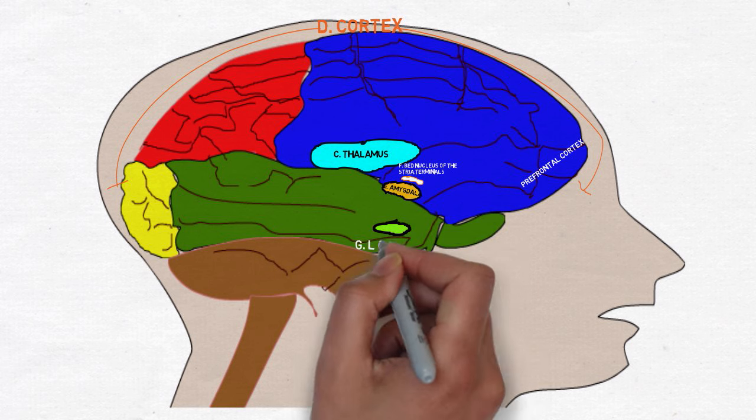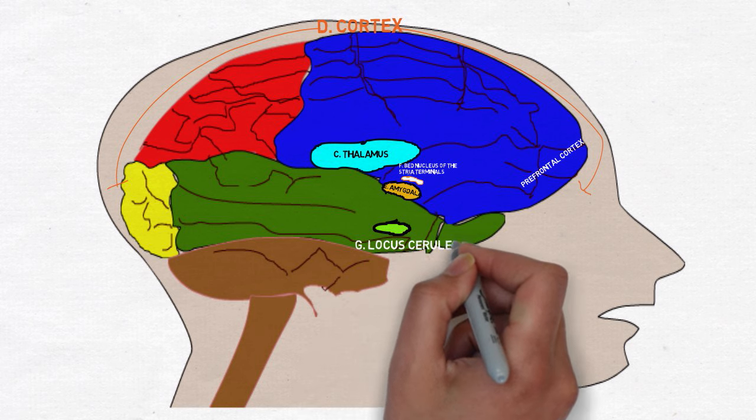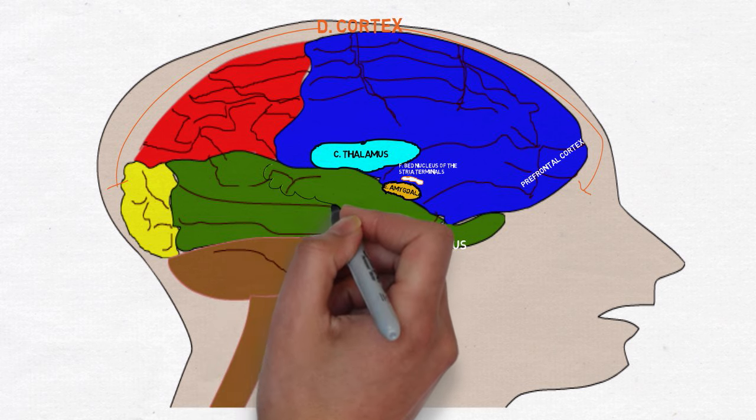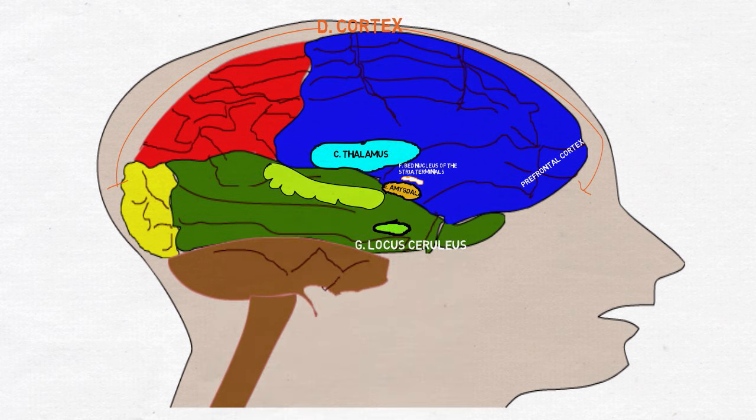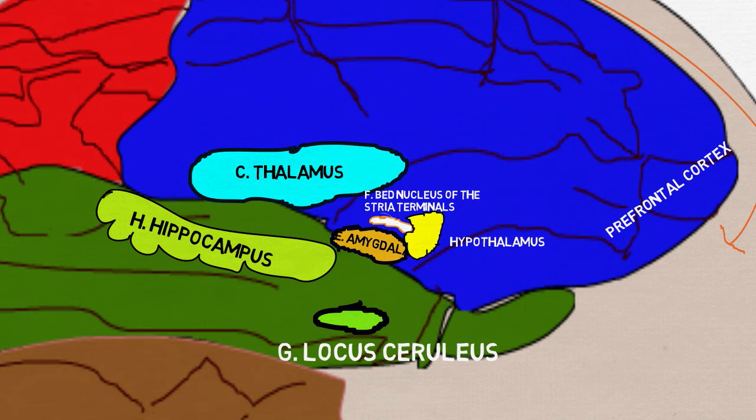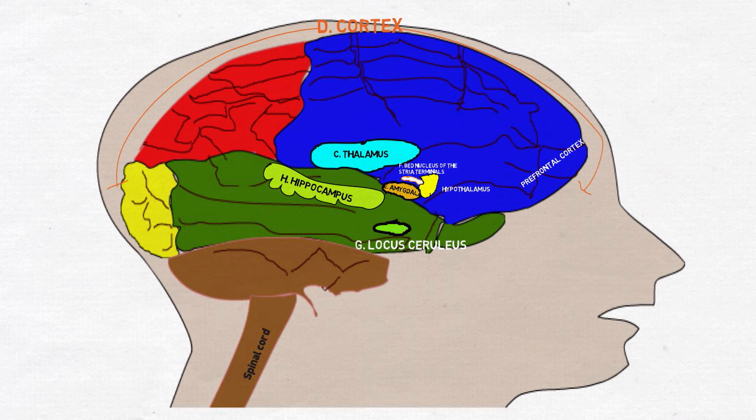The locus ceruleus receives signals from the amygdala and initiates the classic anxiety response: rapid heartbeat, increased blood pressure, sweating and pupil dilation. The hippocampus is your memory centre storing raw information from the senses along with emotional baggage attached to the data by the amygdala.